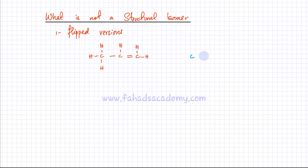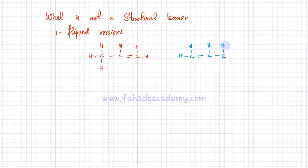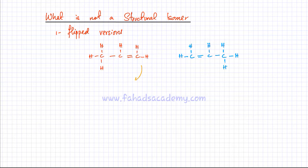If I completely flip this molecule and draw it the other way around — again three carbon atoms with a double bond and hydrogens attached — they look different but they are not different. What has happened is I have rotated this molecule 180 degrees. So flipped or reversed versions do not make isomers; they remain exactly the same thing.